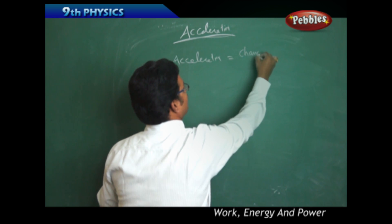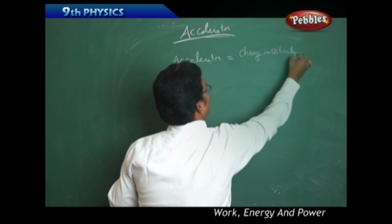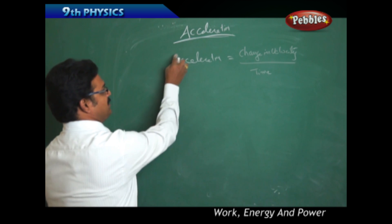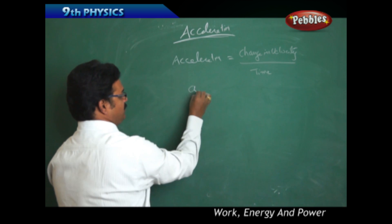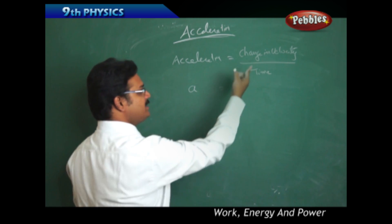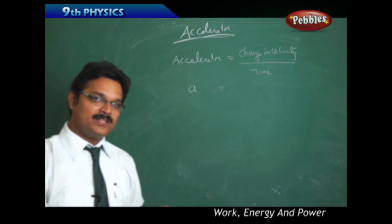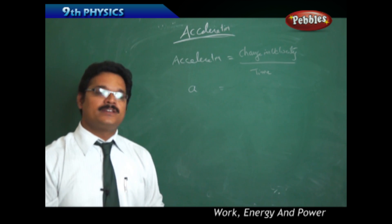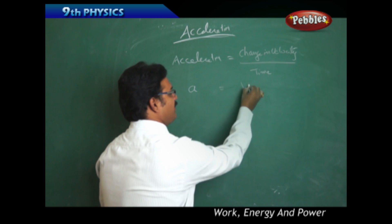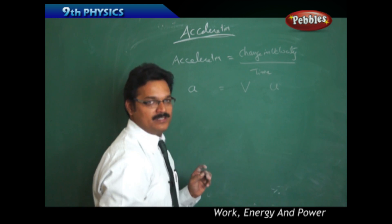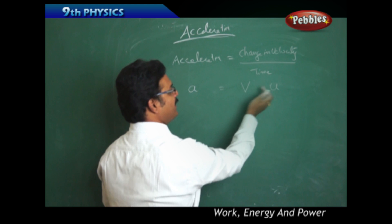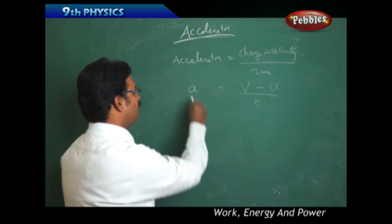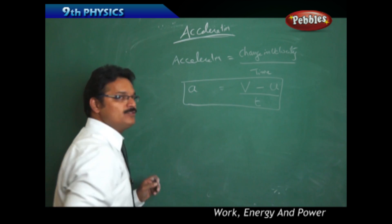The definition: acceleration is change in velocity divided by time. We use the symbol A for acceleration. When we say change in velocity, there are two velocities — initial velocity U and final velocity V. Change means final minus initial, so acceleration A equals V minus U divided by time taken T.